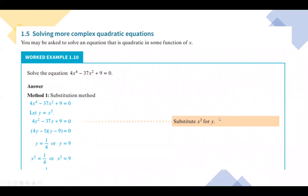For example, solve 4x⁴ minus 37x² plus 9 equals to 0. So: 4x⁴ minus 37x² plus 9 equals to 0.